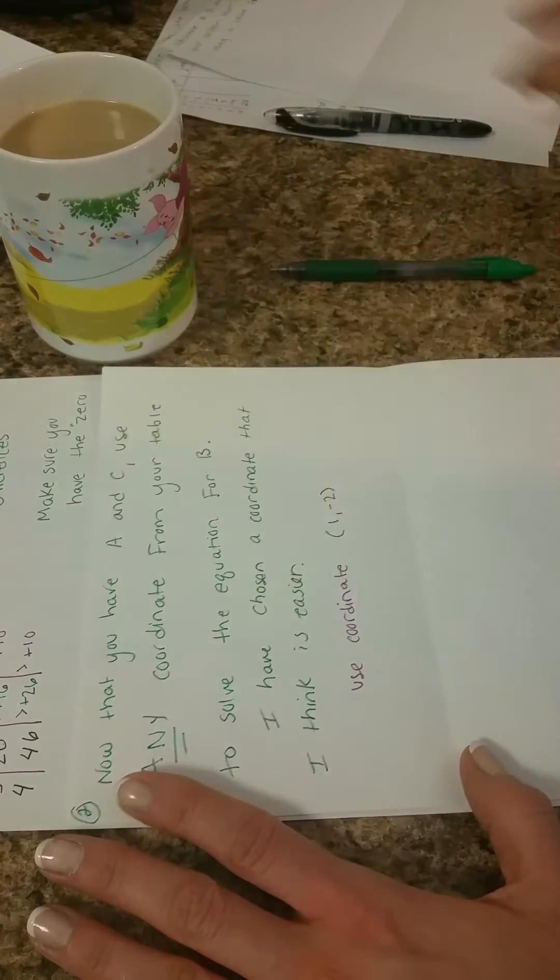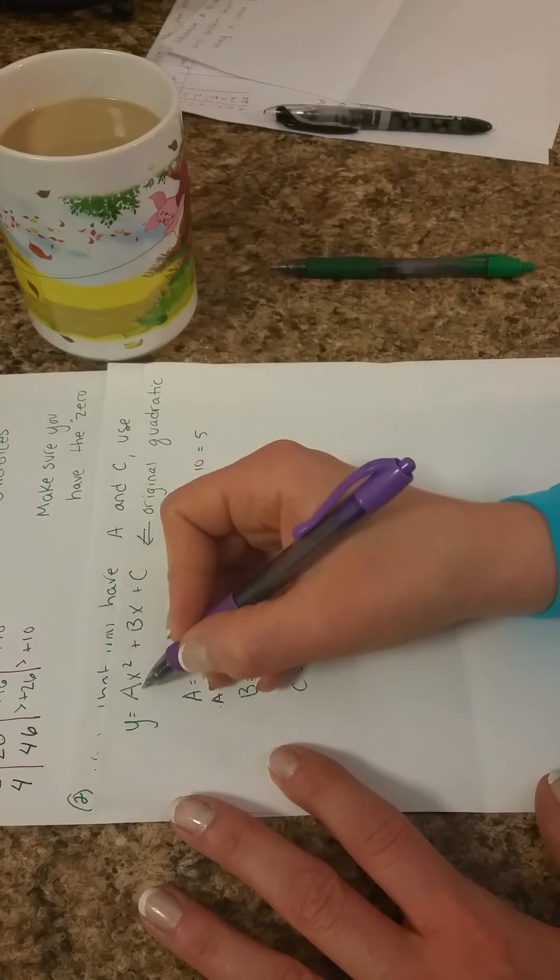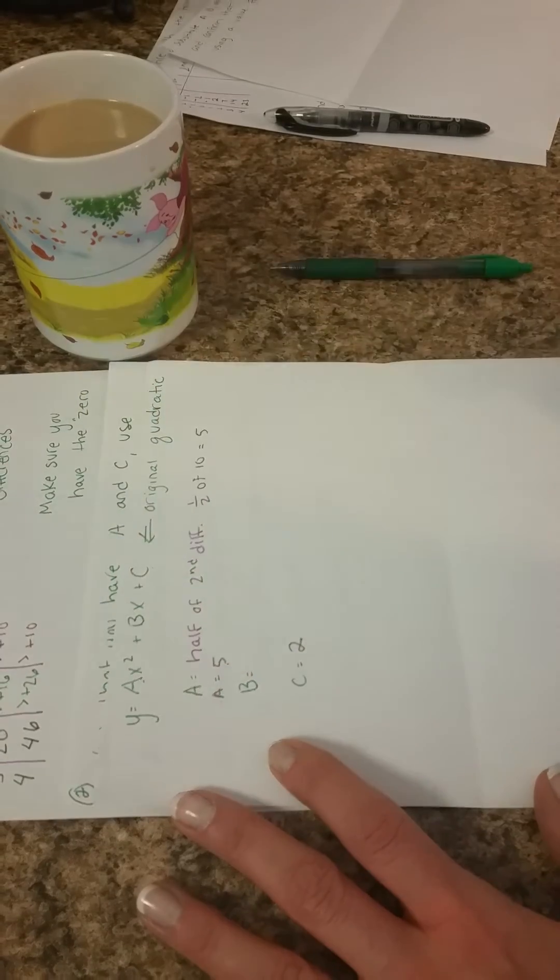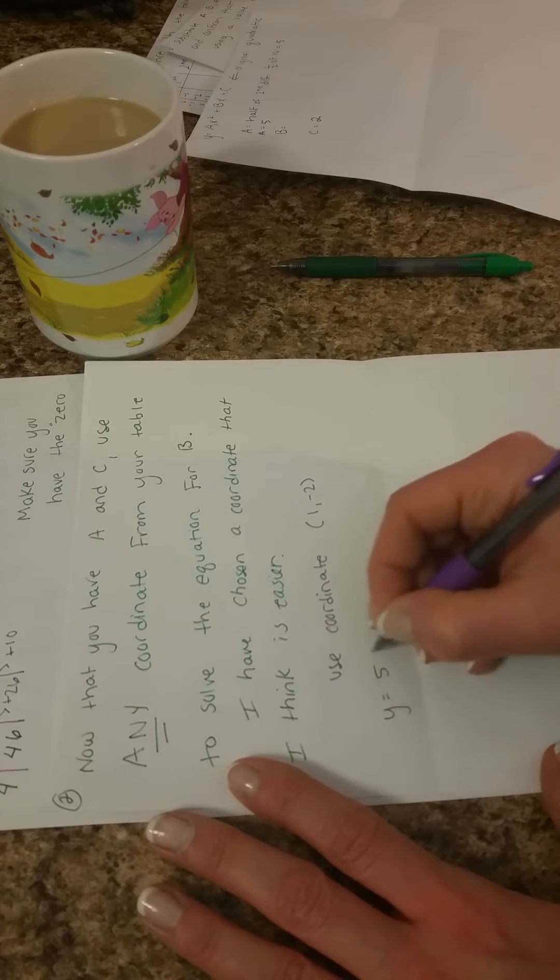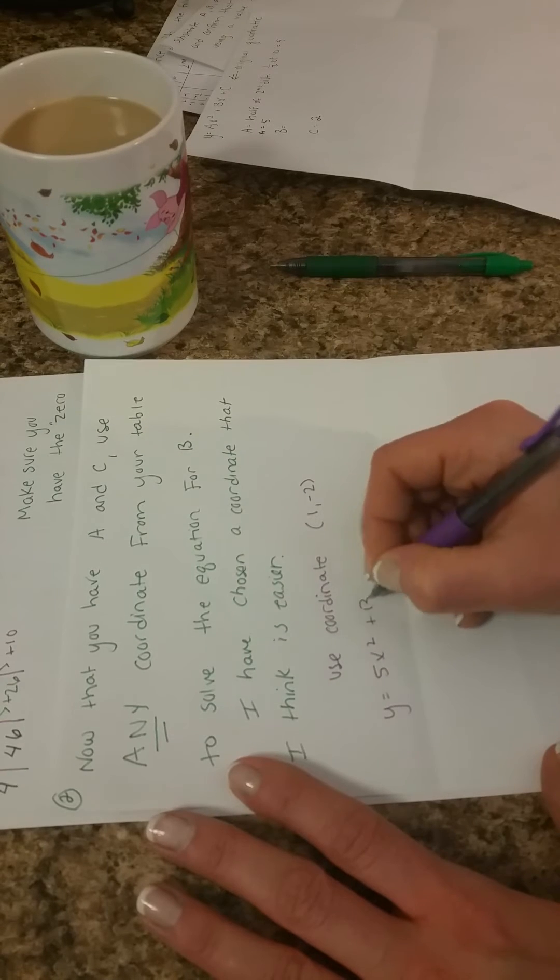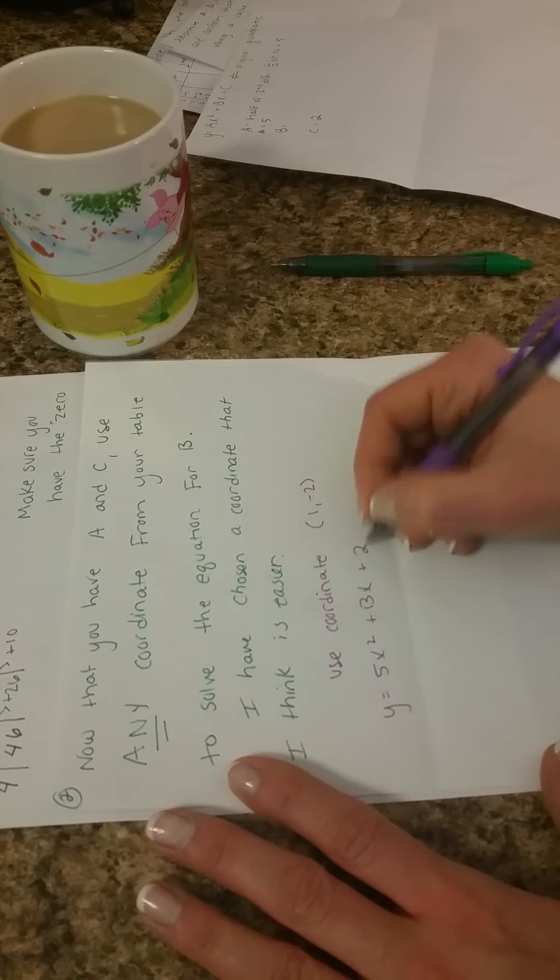And then from the information that I already have for my equation, I'm just going to substitute 5 in for A and 2 in for C. So I want to write out y equals 5x squared plus Bx, because we don't know what B is yet, plus C, which is 2.